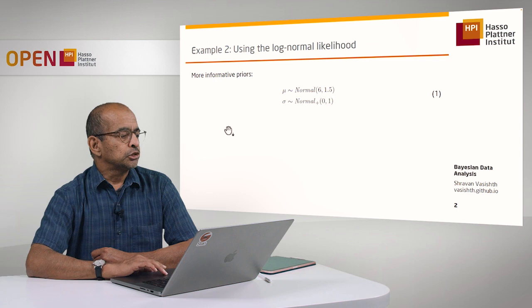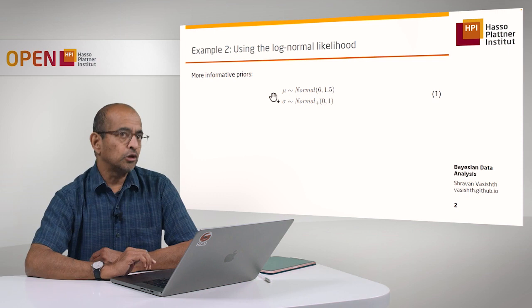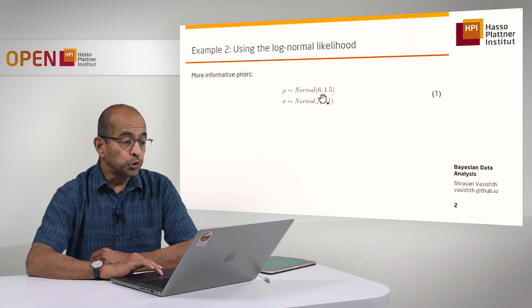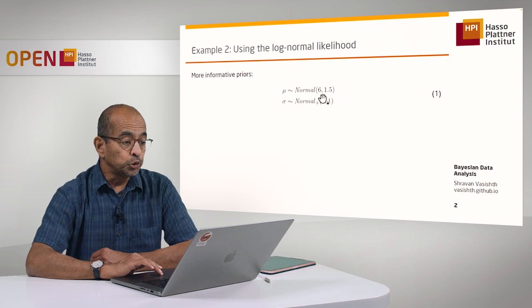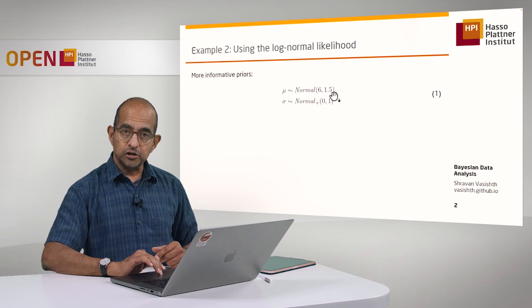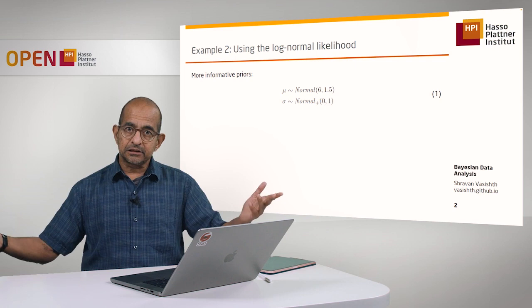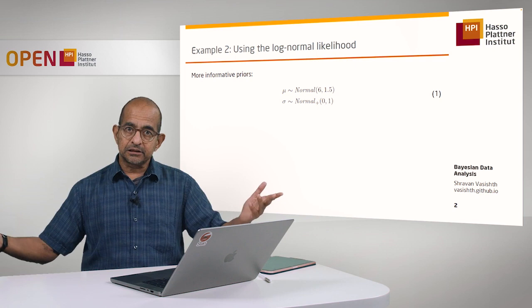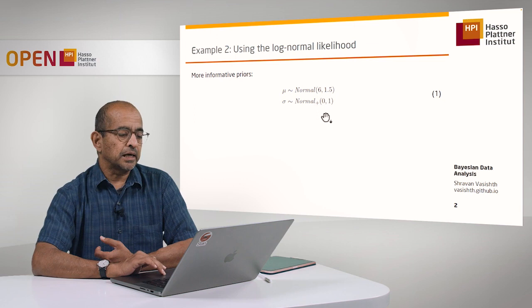Let's say that we assume that the average reading time or reaction time is the exponent of 6 log milliseconds, whatever that number is, with a standard deviation of 1.5. You could plot this using the D norm function, which is a very good exercise to get a sense of whether this is a reasonable prior specification. Or you could generate data from this normal distribution using R norm, exponentiate it, and then look at the distribution of that data to see if it reflects your beliefs about average reaction times. This is the sigma prior—it's a truncated prior because you cannot have less than 0 milliseconds standard deviation.